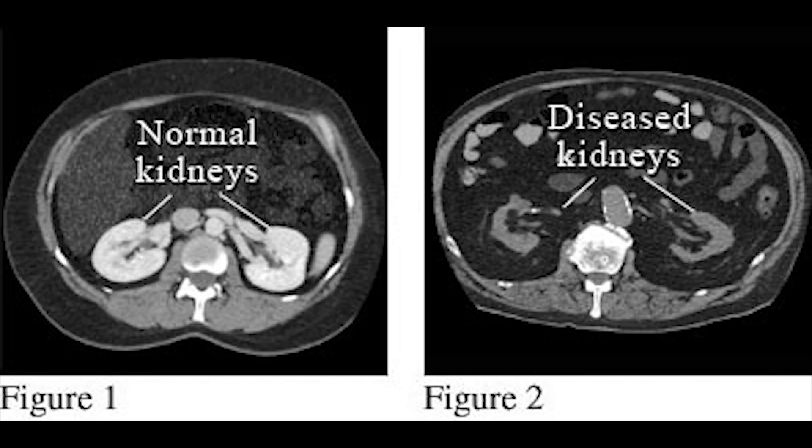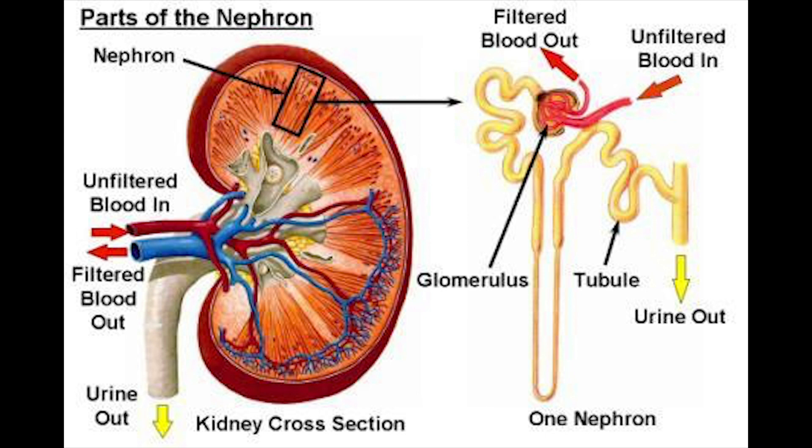We measure kidney function by measuring the level of waste product in the blood, and one of the most commonly used is called creatinine. Creatinine is a waste product produced by our muscles, and our kidneys get rid of it. So the higher the level, the worse the kidney function.